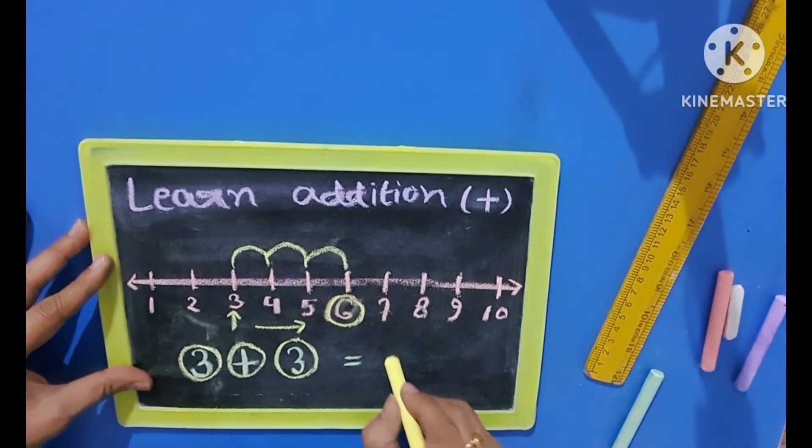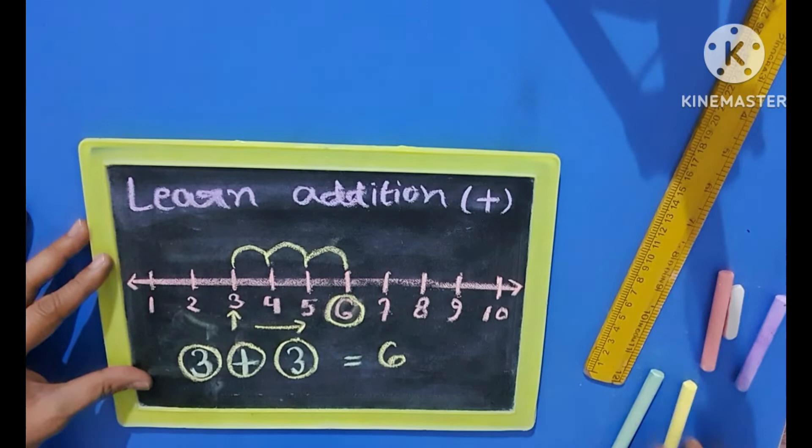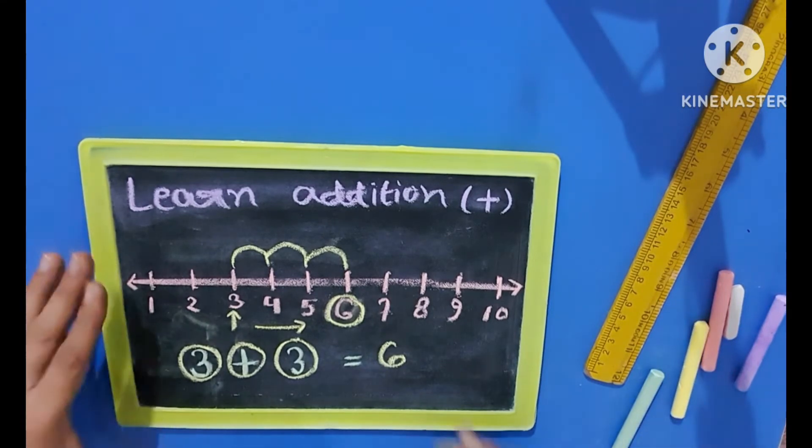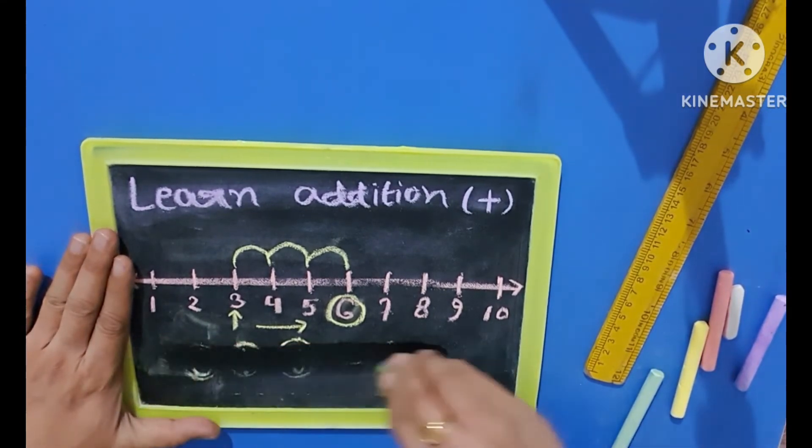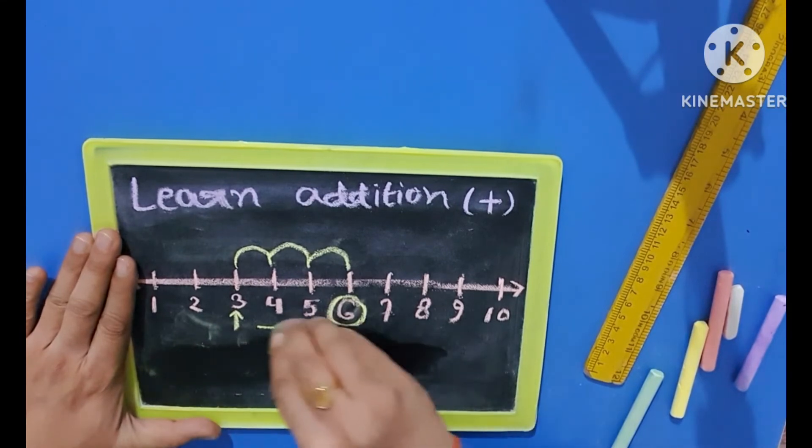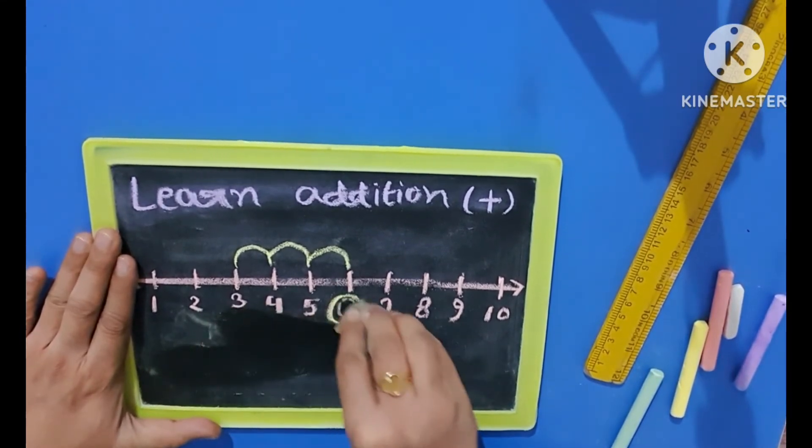So 1, 2, and 3. Here is the answer. Answer is 6. Was it easy kids? Yes or no? Yes, it is easy. Now we will try with other numbers.